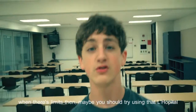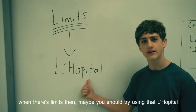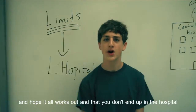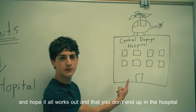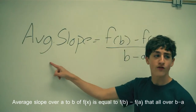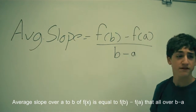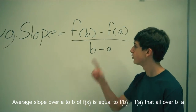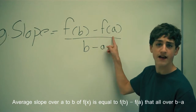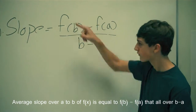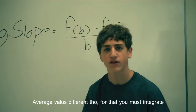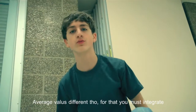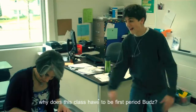But if f double prime changes signs, there's a point of inflection. When there's limits, then maybe you should try using L'Hôpital, and hope it all works out and that you don't end up in the hospital. Average slope over a to b of f of x is equal to f of b minus f of a, all over b minus a.